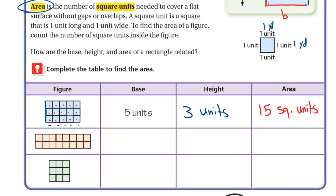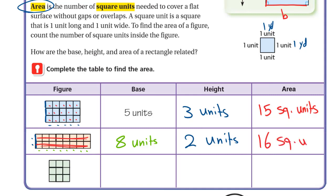For the second figure, if this is the base, counting one through eight — that's 8 units. And the height, which is perpendicular to it, is this side, which has 2 units. For the area, we count the number of squares: these are eight and eight, which is 16 square units.